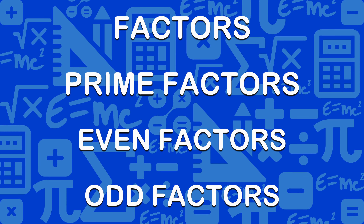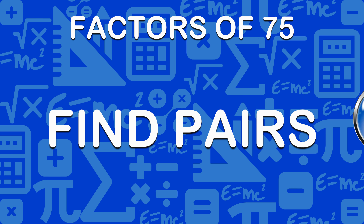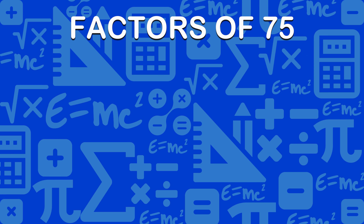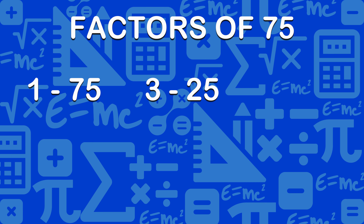Firstly, we will find pairs of factors. Pairs are numbers that multiply to give the given number. Here are the pairs of factors of 75: 1 and 75, 3 and 25, 5 and 15.